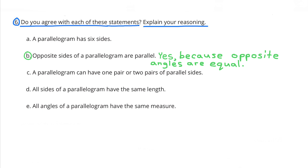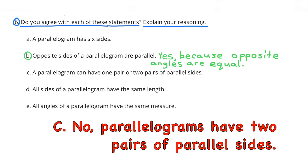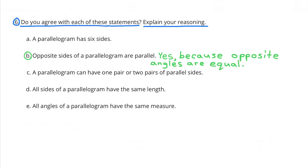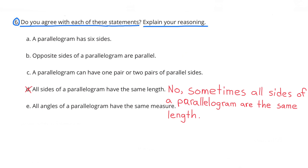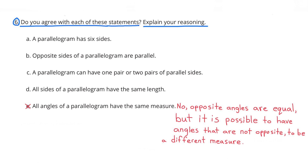C: A parallelogram can have 1 pair or 2 pairs of parallel sides. No, parallelograms have 2 pairs of parallel sides. D: All sides of a parallelogram have the same length. No, because only sometimes all sides of a parallelogram are the same length. E: All angles of a parallelogram have the same measure. No, because opposite angles are equal, but angles that are not opposite can have different measures.